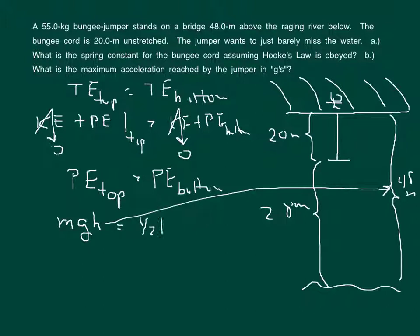The potential energy at the bottom, which we learned from applying Hooke's Law, is one-half kx squared, where x is the distance that the bungee is stretched, which in this case is 28 meters. Now we want to solve for k, so we have k is equal to 2mgh over x squared.